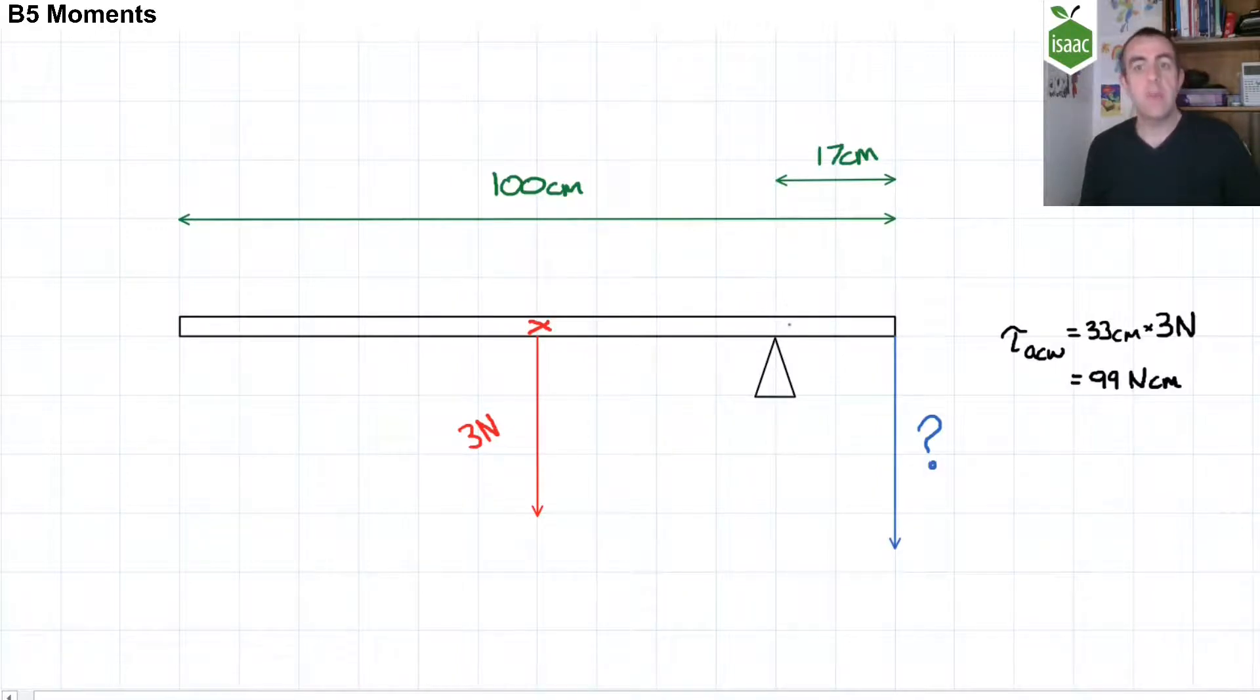So the anticlockwise moment is 99 newton centimetres. That's going to have to be the same as the clockwise moment if this beam is in equilibrium. So the clockwise moment of 99 newton centimetres is equal to 17 centimetres multiplied by that force, so the force is 5.8 newtons.